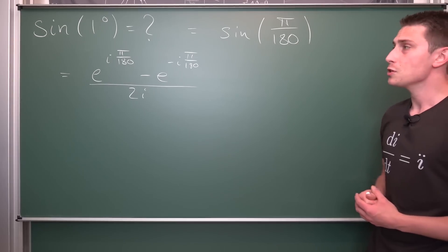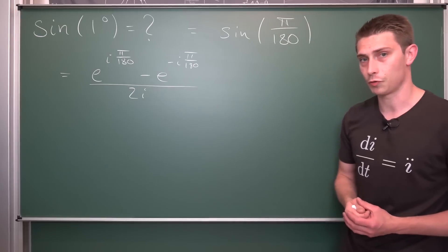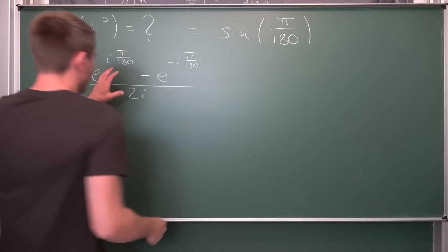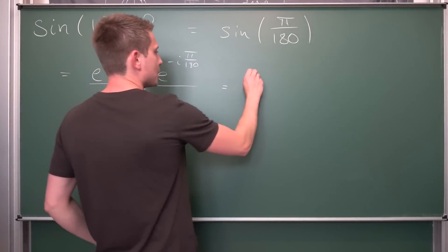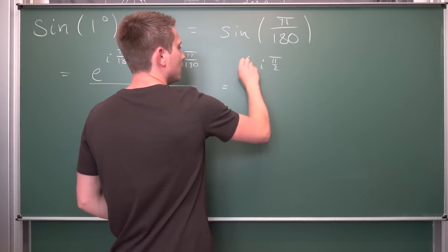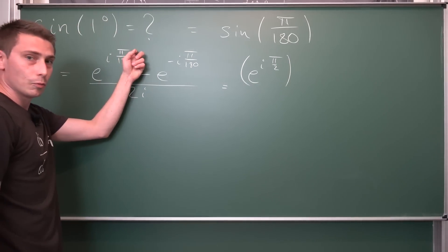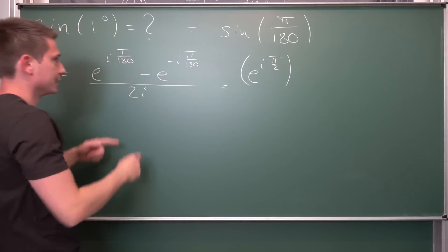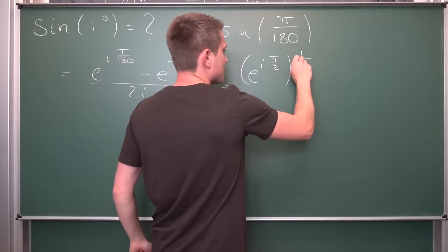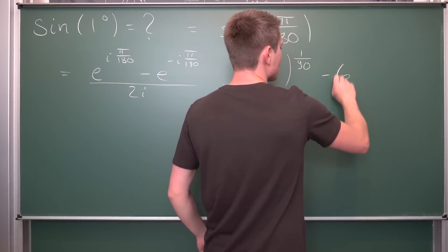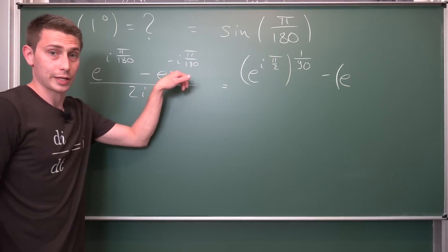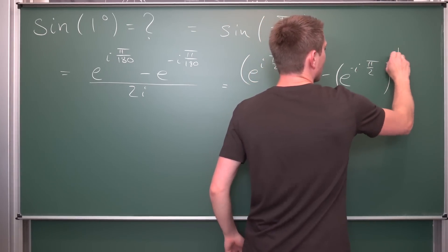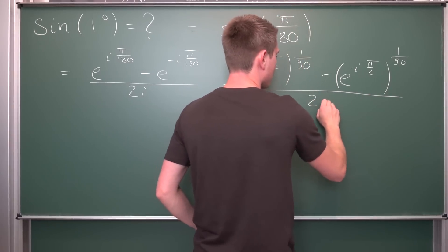We can use a few arguments in the complex plane on a few branches to rewrite this a tiny little bit. What I'm going to do at first is extract an e to the i pi over 2 from this whole thing. So we are going to rewrite the first complex exponential function as being e to the i pi over 2, to the 1 over 90, minus e to the negative i pi over 2, then to the 1/90th, and all of this divided by 2i.